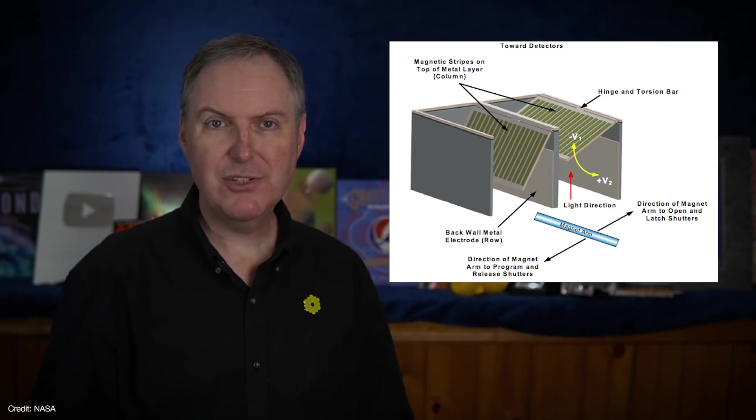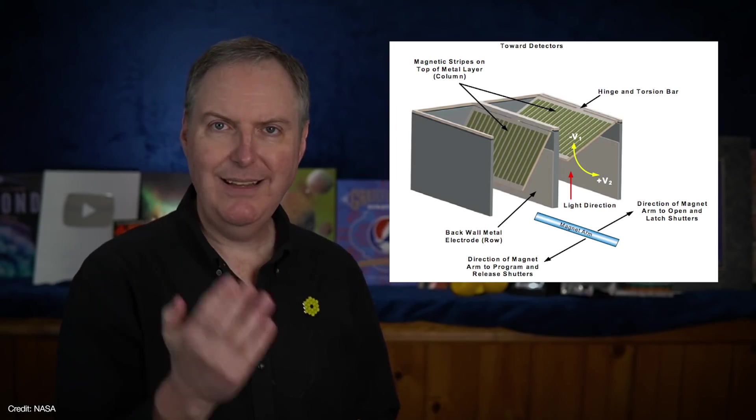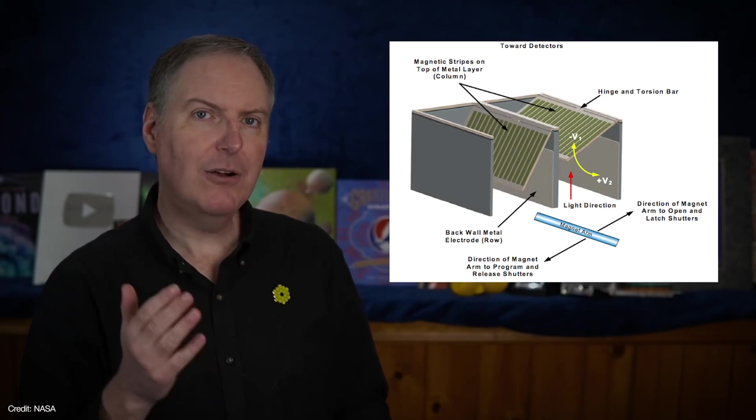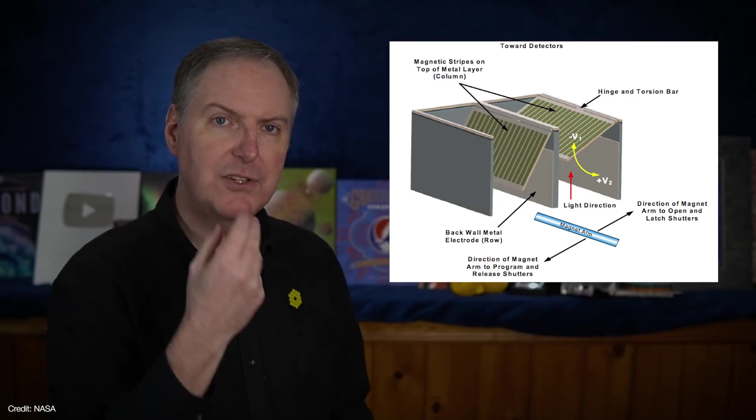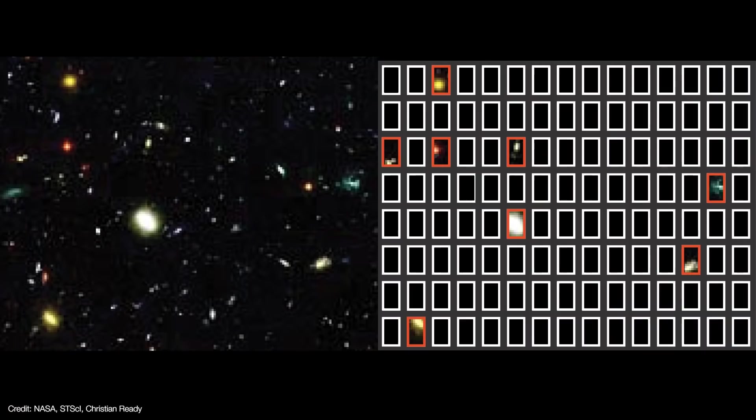Prior to an observation, pre-selected shutters are given a small electric charge. A magnetic arm sweeps past and the charged shutters swing open. Open shutters allow light from a particular part of the field to pass through, while the closed shutters block everything else.